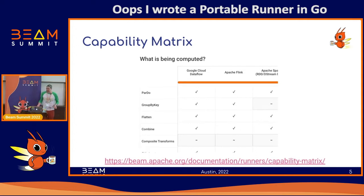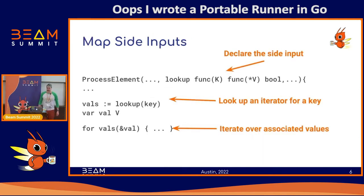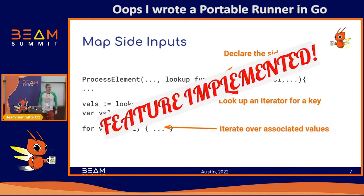Let's make this more concrete by focusing on a specific feature we'd like to add to an SDK. Some features, by their nature, are very straightforward to test and implement — they either work or they don't. For example, map side inputs, recently added to the Go SDK. You basically turn your KVP collections into lookup tables. If a user is able to pass any key and retrieve the expected values, we know it's working. We can contrive various pipelines and data sets that require these lookups to verify this behavior. Feature implemented.